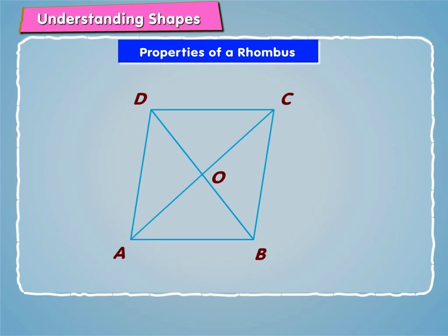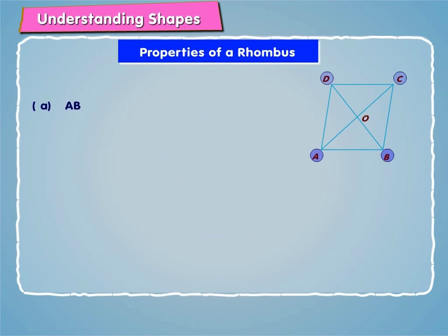In the on-screen given figure, ABCD is a rhombus. Hence, from the properties of a parallelogram we have AB is equal to BC is equal to CD is equal to AD.